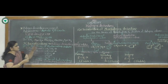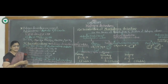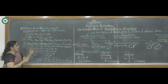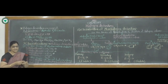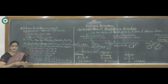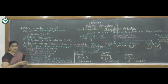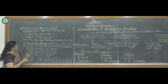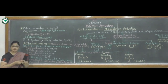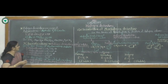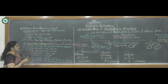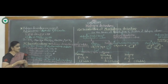Alkyl halides are also called as alkyl halides or haloalkyl halides. Aromatic halogen derivatives are also called as aryl halides or haloaryls. In this way, two types of halogen derivatives are formed from these hydrocarbons.